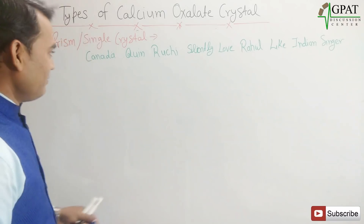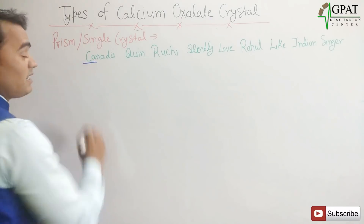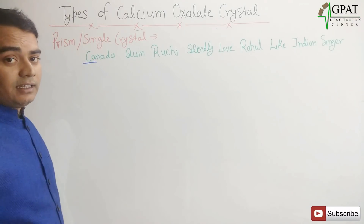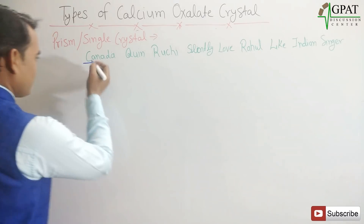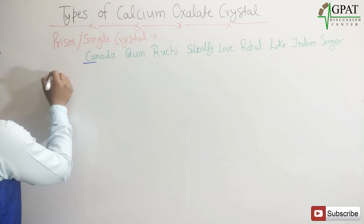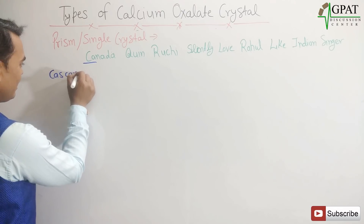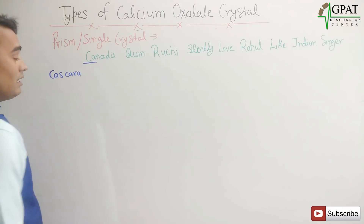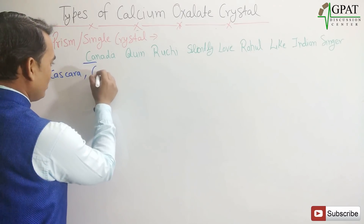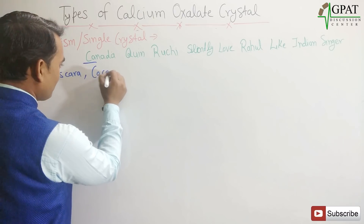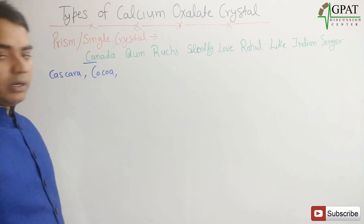Here is how to decode it. 'CA' from Canada gives two major drugs: the first one is Cascara, and the second is Cocoa — C for Cascara and Cocoa.